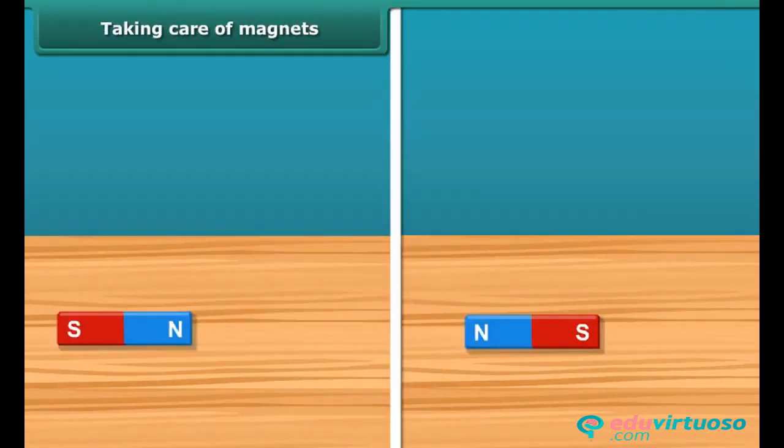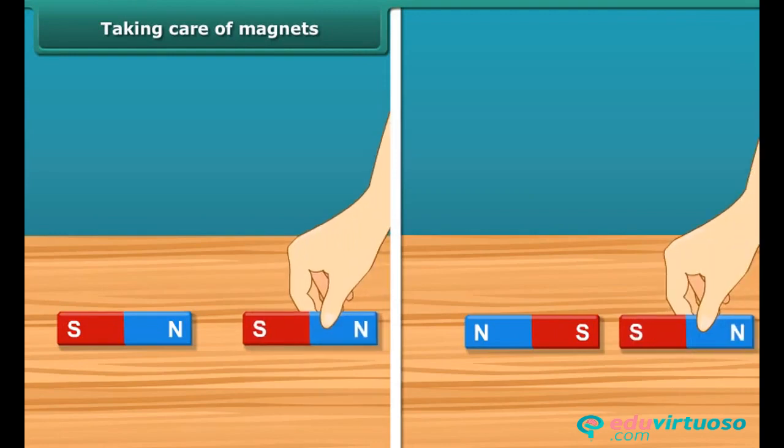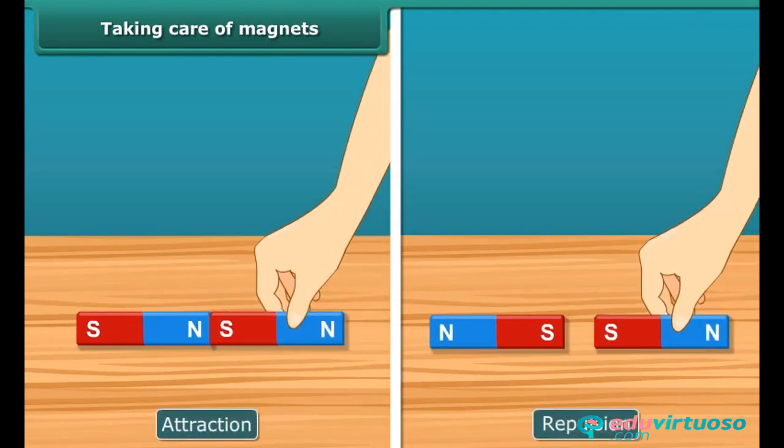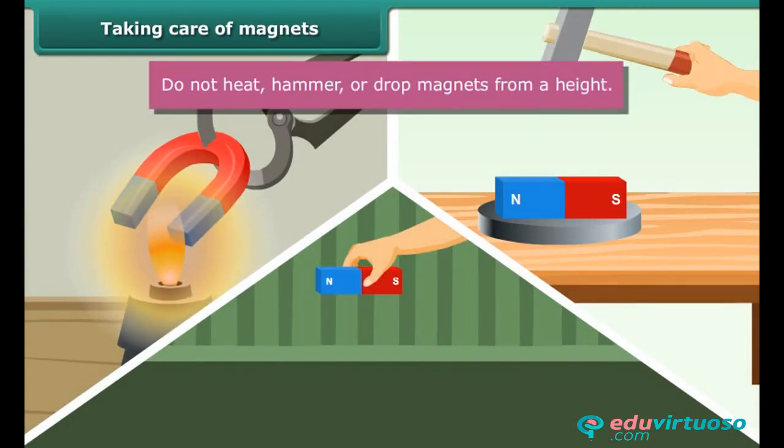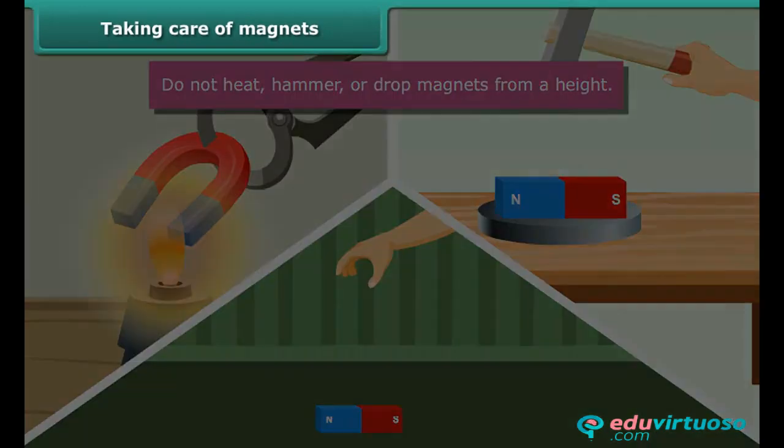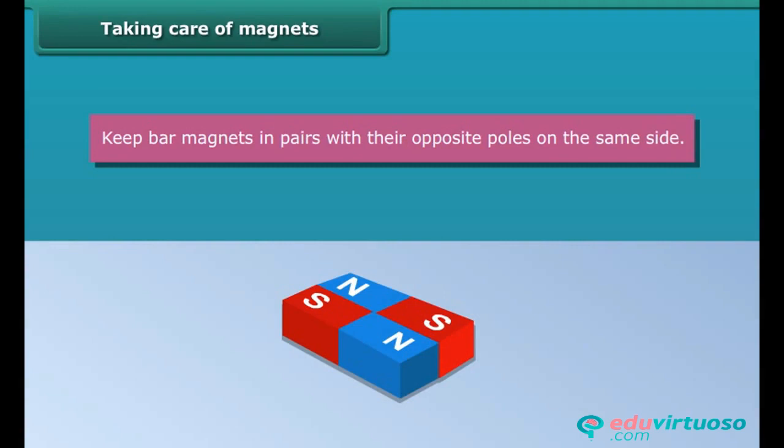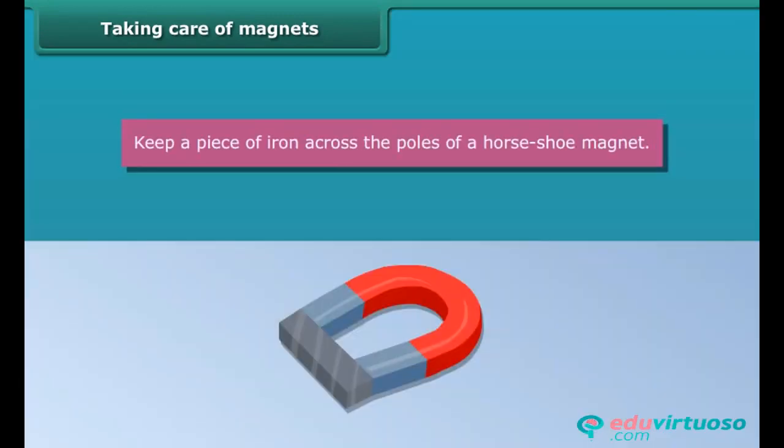We are now aware of the attraction and repulsion properties of a magnet. To keep magnets safe and in working conditions, follow these guidelines. Do not heat, hammer, or drop magnets from a height. They will lose their property if done so. Keep bar magnets in pairs with their opposite poles on the same side. Use wood to separate them. Keep a piece of iron across the poles of a horseshoe magnet.